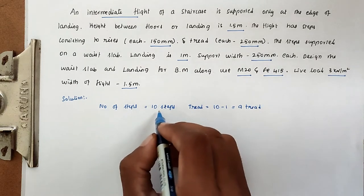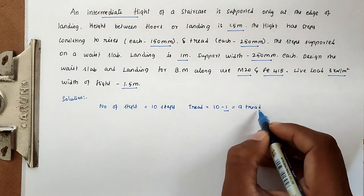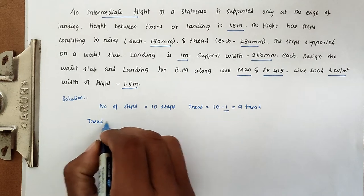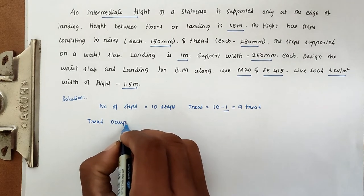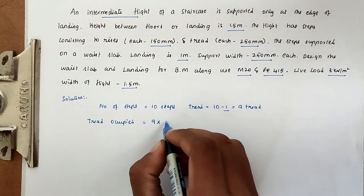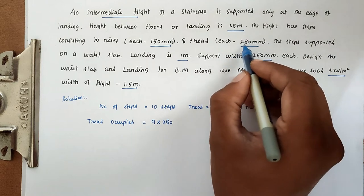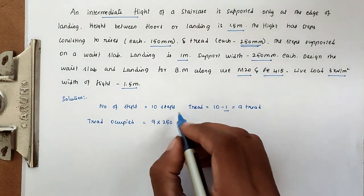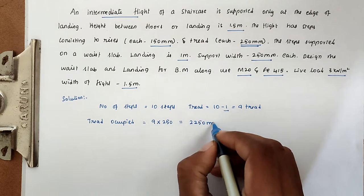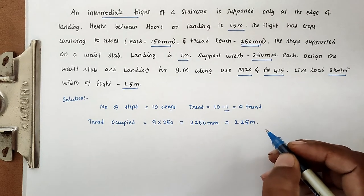Whenever we take the steps, the tread count is minus 1, so 9 treads. Now tread occupied: 9 treads × 250mm each gives 2250mm, which we convert to 2.25 meters.